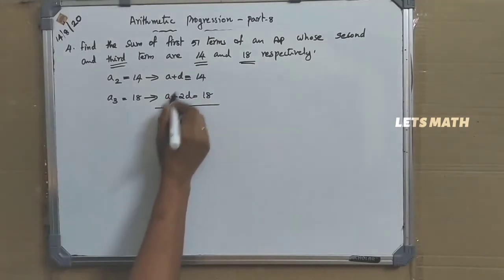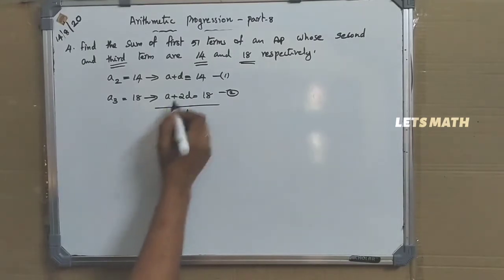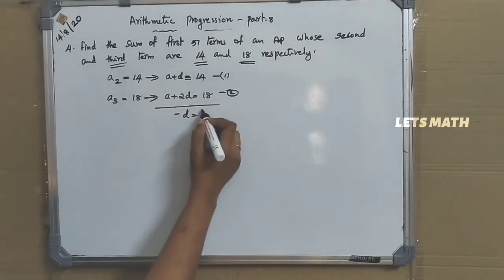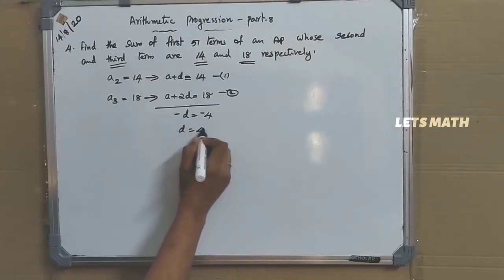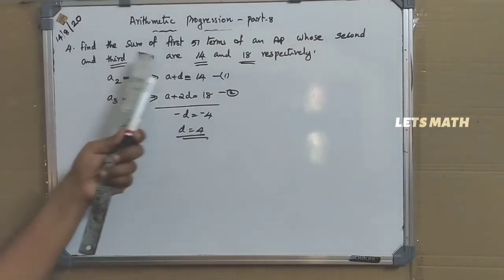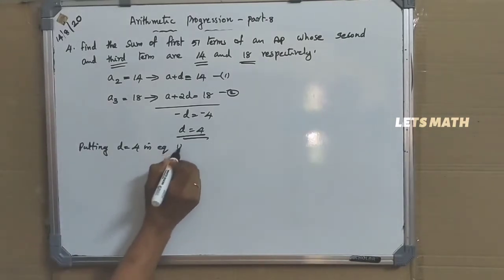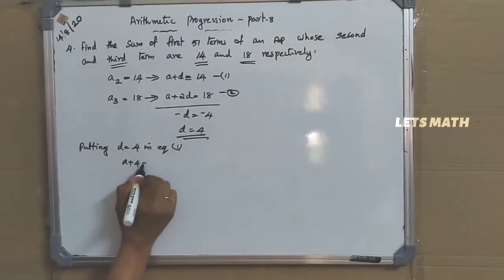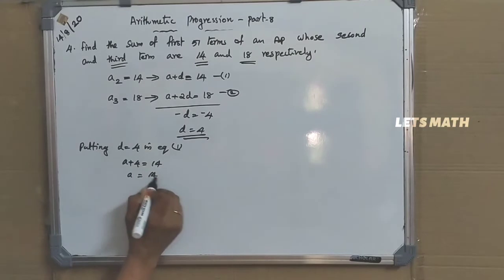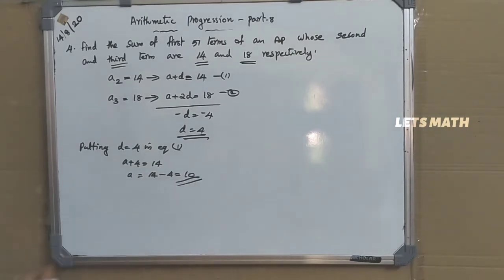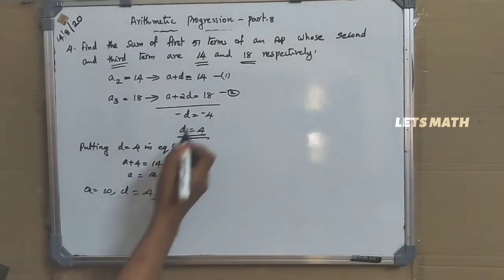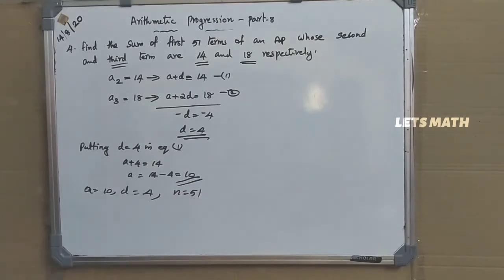Subtracting equation 1 from 2: A minus A becomes 0, D minus 2D is minus D equal to minus 4, so D equal to 4. From the question, N equal to 51. Putting D equal to 4 in equation 1: A plus 4 equal to 14, giving A equal to 10. So A equal to 10, D equal to 4, and N equal to 51.